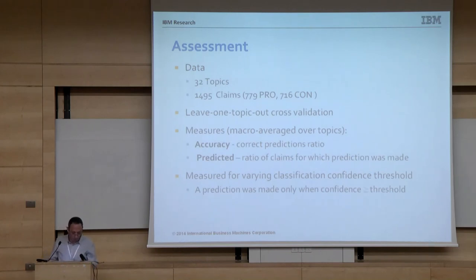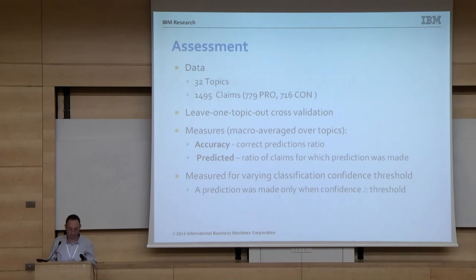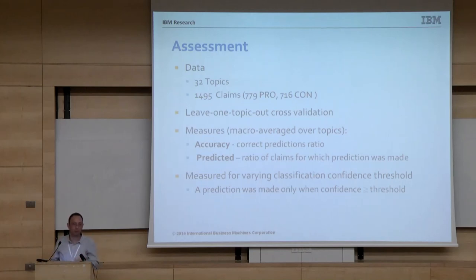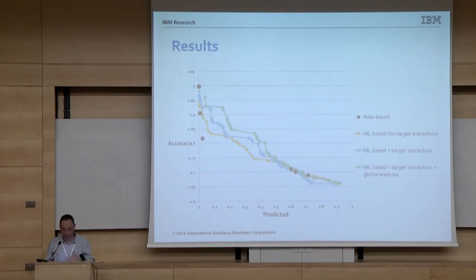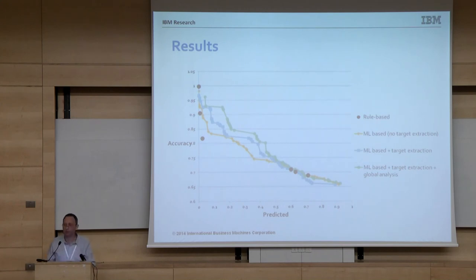Our dataset contains 32 topics and nearly 1500 claims, roughly balanced between pro and con. We measure accuracy and prediction rate — the ratio of claims for which we make a prediction — which depends on a confidence threshold, and we evaluate across different thresholds. The main takeaway is that each layer improves results: machine learning-based classification improves over rule-based, target extraction further improves it, and global analysis improves it further. I'll let Noam wrap up and show the demo. Thank you.